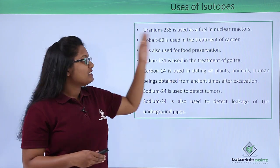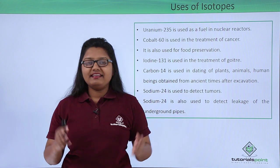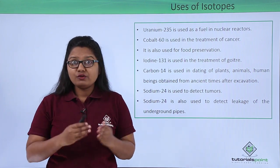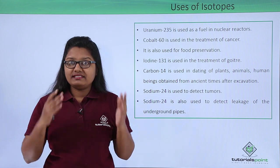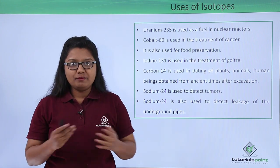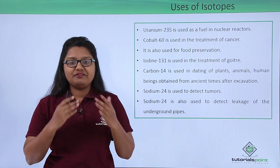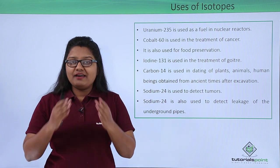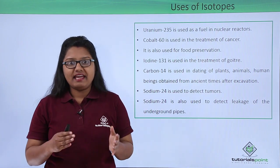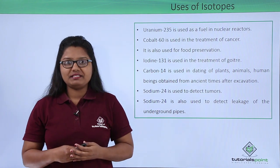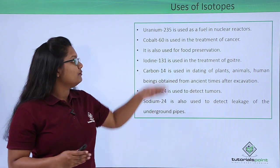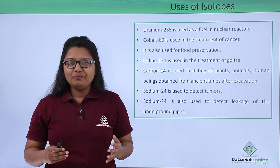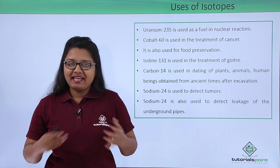So this was all about isotopes and their uses. In this video we learned that isotopes are atoms of the same element with the same atomic number but different mass number. Isotopes of a particular element have the same chemical properties but different physical properties. I hope you had fun learning this lesson. Thank you.